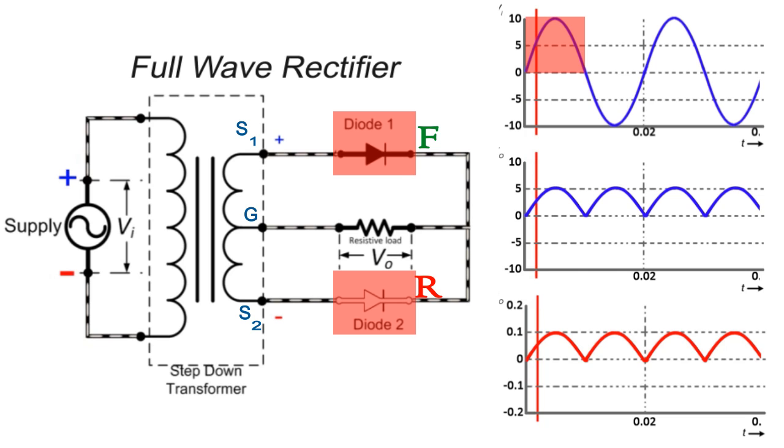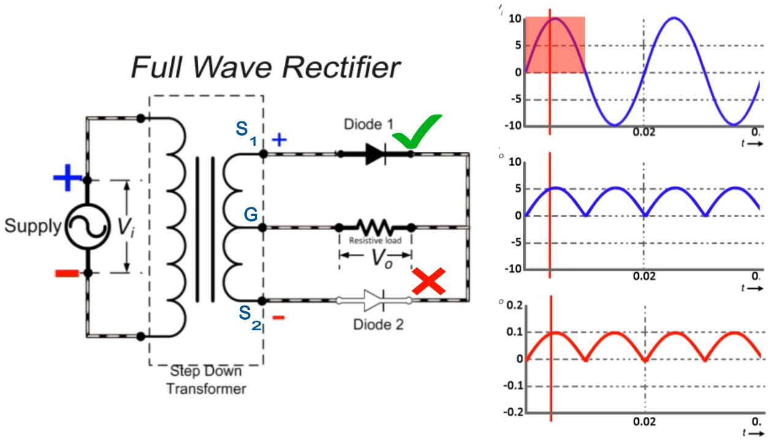As explained in the theory behind the PN junction diode, the diode D1 will conduct because it is in forward biased condition and D2 will not conduct because it is in reverse biased condition during the positive half cycle. Thus, the current flow will be in this direction, from A to B. The positive half cycle appears across the load resistance R.